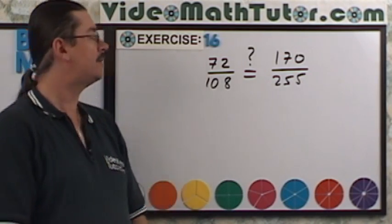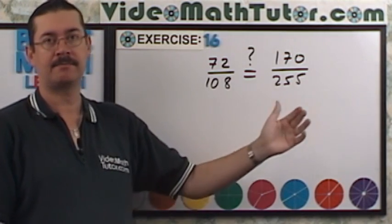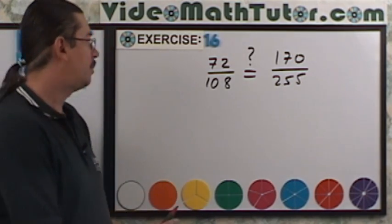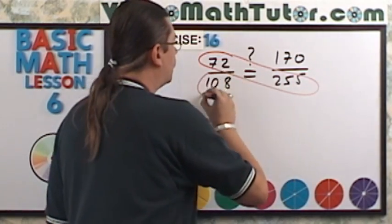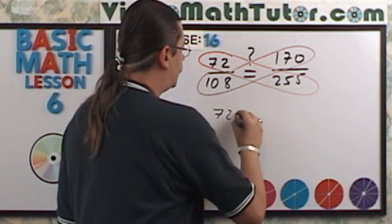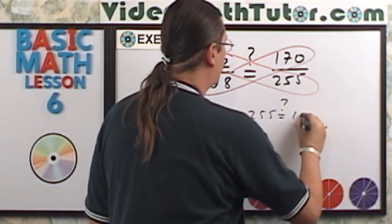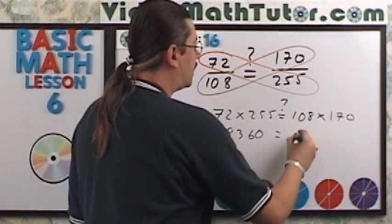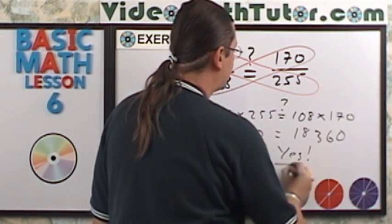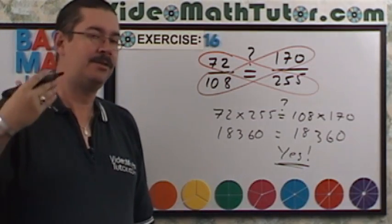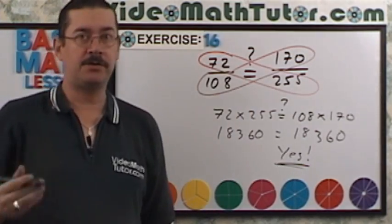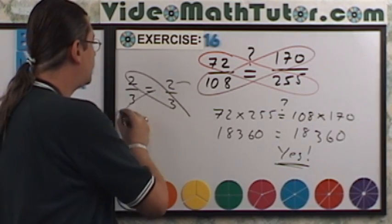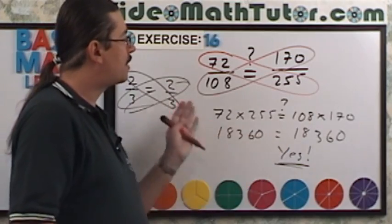For exercise 16, determine if these two fractions are equivalent. There are a couple of ways. If you can use a calculator, do the cross multiplication: 72 times 255 equals 18,360, and 108 times 170 also equals 18,360 — so yes, they are equivalent. Without a calculator, reduce the fractions — with a little effort, both reduce to 2 thirds, so right away you can tell yes, they are equivalent.